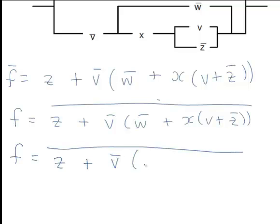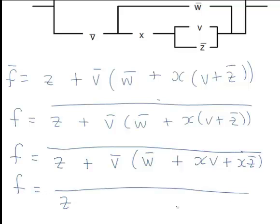So it's Z plus V bar times W bar plus XV, expanding those innermost brackets, plus XZ bar. Then we could expand through that part of the expression by V bar to get Z plus V bar W bar plus V bar XV plus V bar XZ bar.